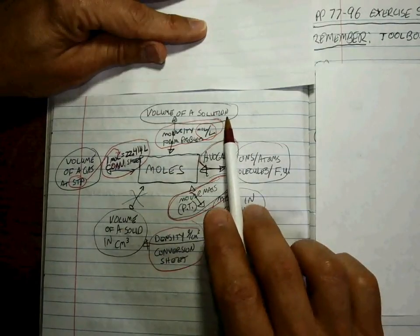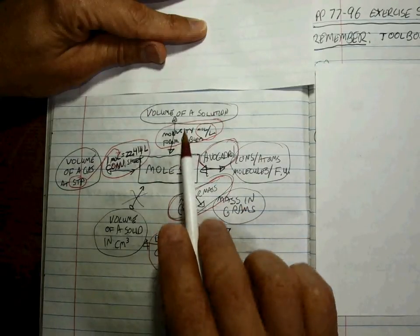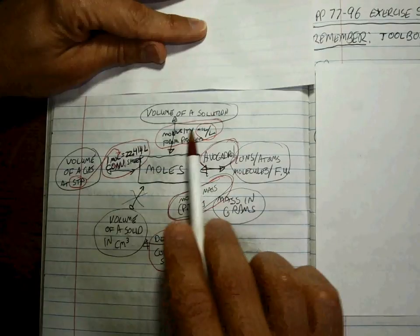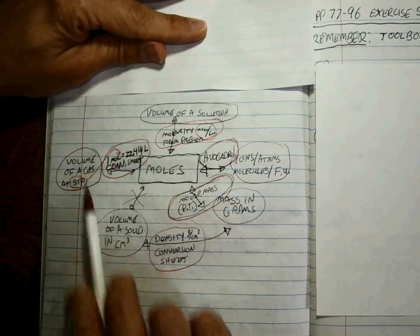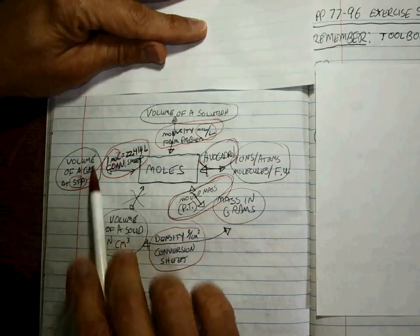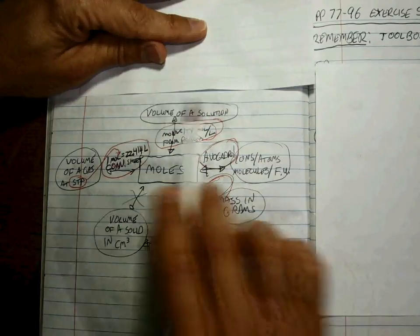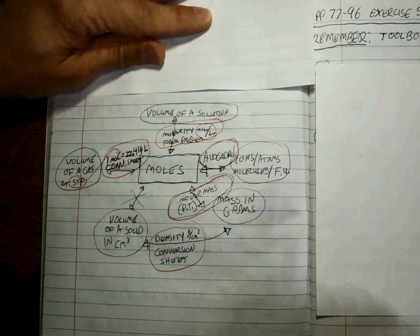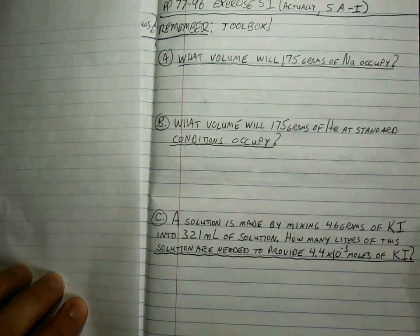And then finally we dealt with volume of a solution, and that's molarity. Each molarity will be different from each problem, but you have to remember moles per liter, moles per volume of a solution. So we've got three different kinds of volumes, and your job is to be able to tell the difference for each of these. This all has to be in your head.